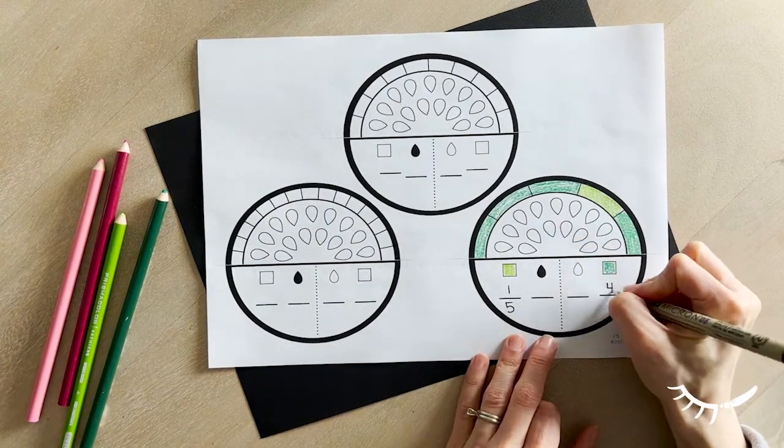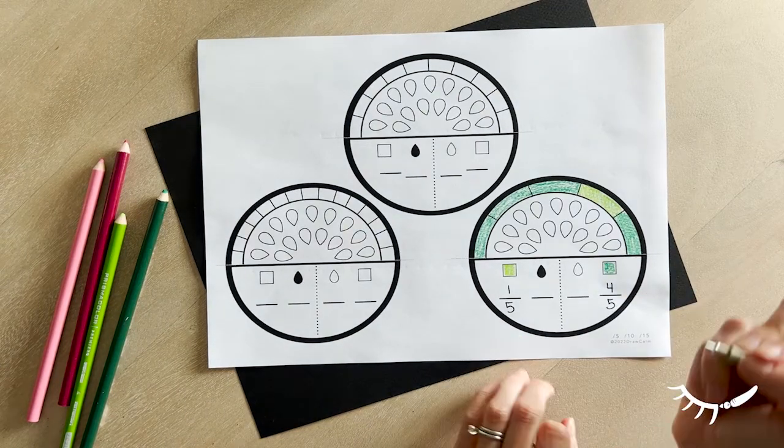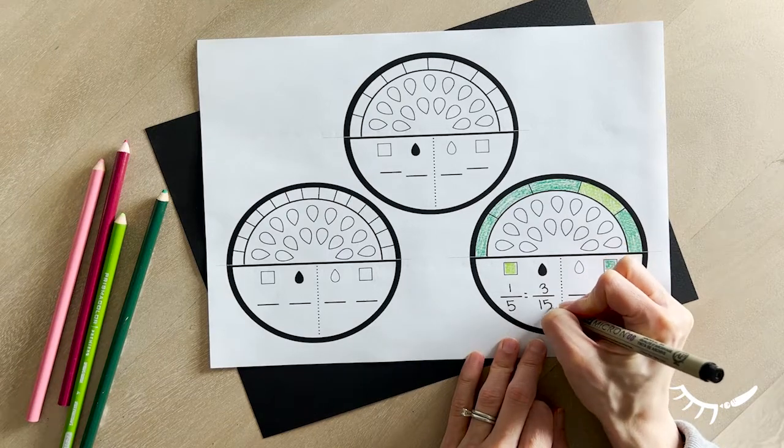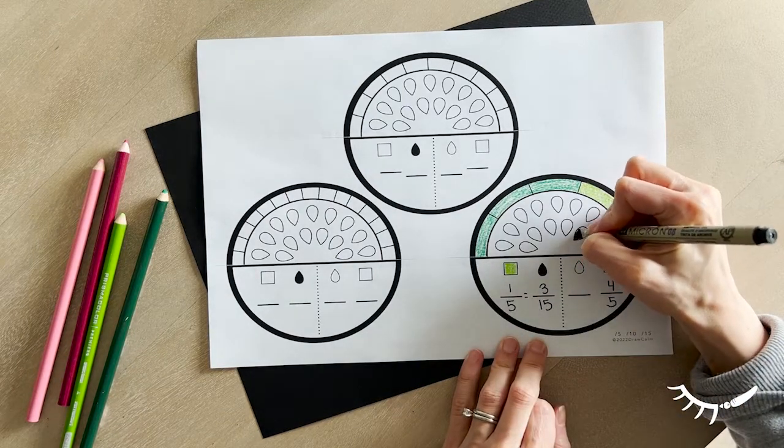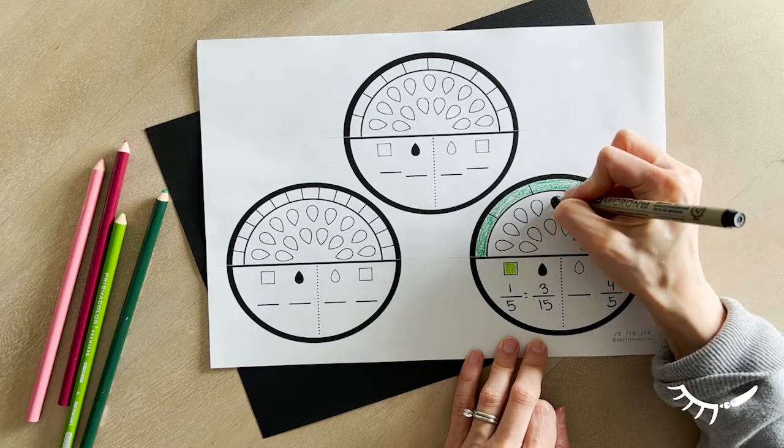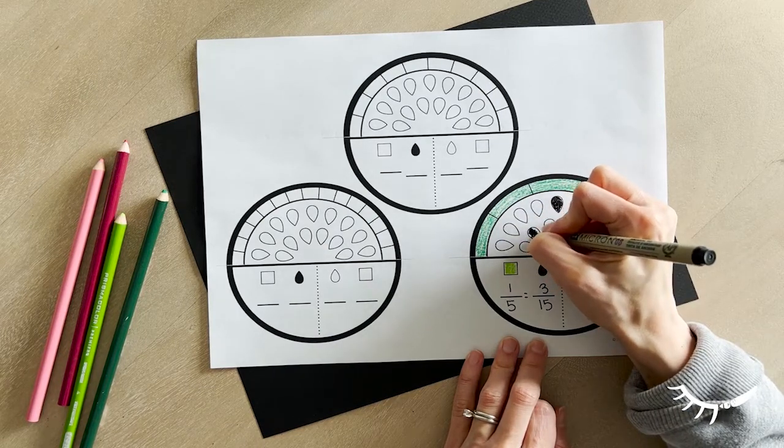Here I have one-fifth for bright green, four-fifths for dark green. Then color the seeds to build an equivalent fraction. Three-fifteenths are black and the remaining twelve-fifteenths are white.